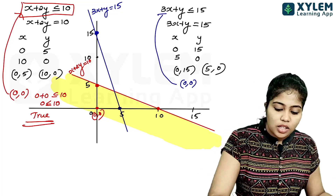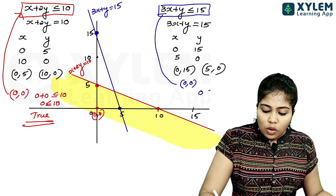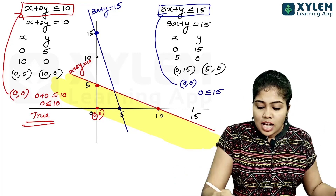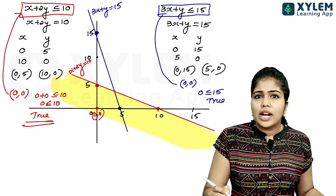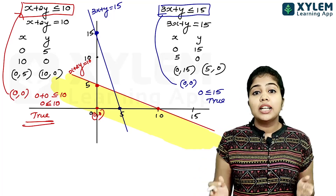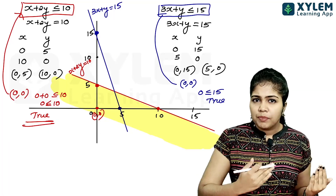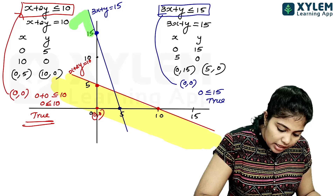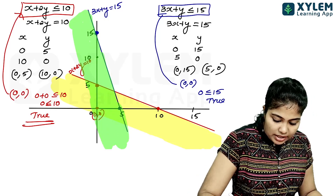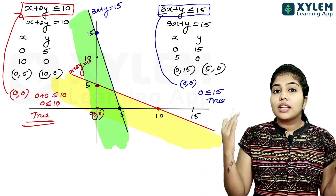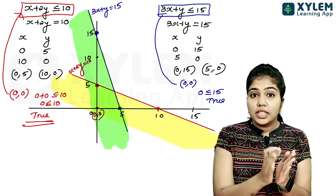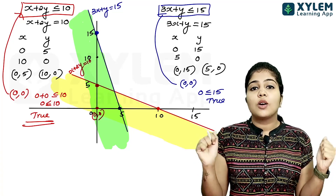For 3x plus y less than or equal to 15: substituting 0, 0 gives 0 less than or equal to 15, which is also true. So the region containing origin 0, 0 is the valid region for both constraints. We look at the common region of both inequalities.